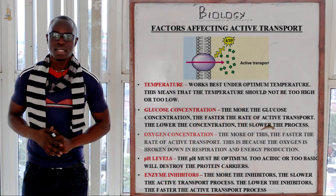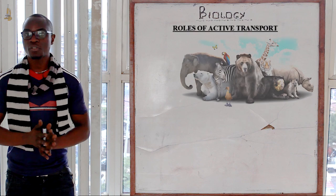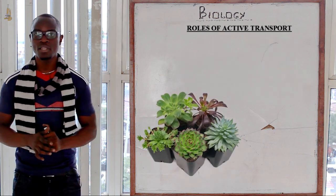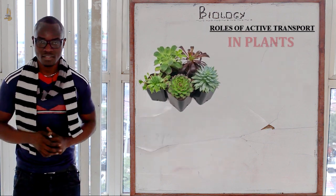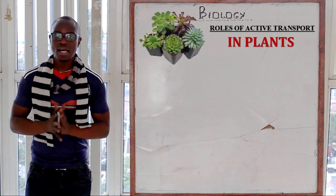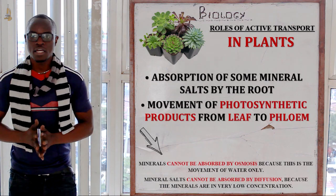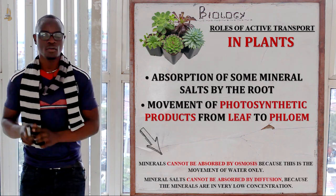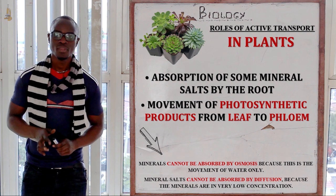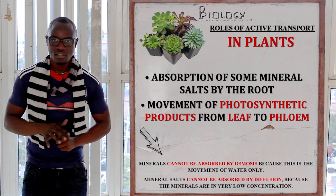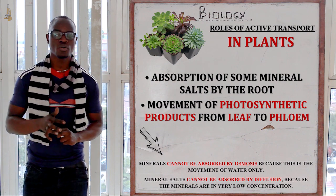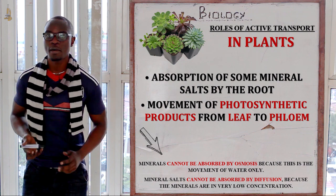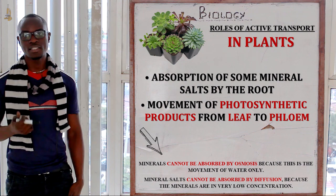Let's look at the roles of active transport in animals and in plants. Beginning with plants: the roles of active transport in plants include, first, absorption of some minerals in the roots, and second, movement of photosynthetic products from the leaves to the phloem of the plant.